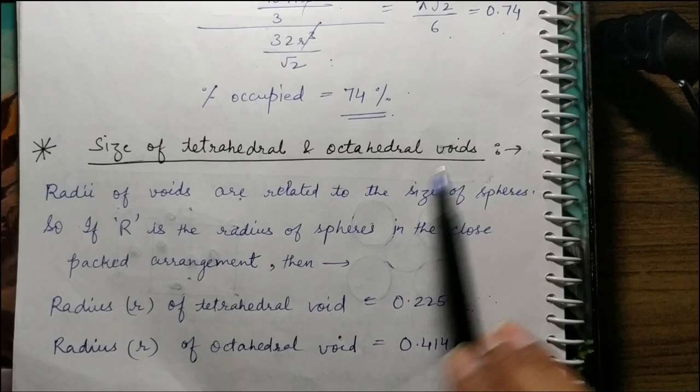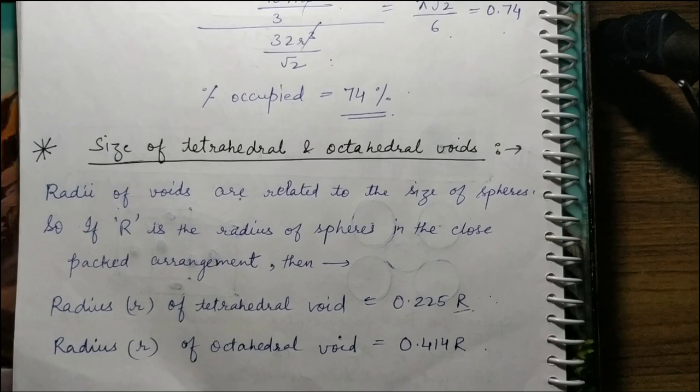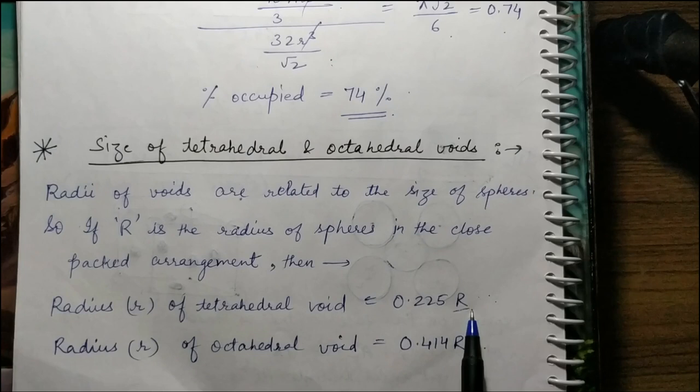The packing fraction calculated for FCC is 74%. This is the best packing efficiency. This is the FCC lattice. After that, we found the tetrahedral and octahedral voids and the relation between them. The radius of a tetrahedral void is 0.225R, where R is the radius of the sphere or atom. And the octahedral void radius is 0.414R. So the octahedral void is bigger.